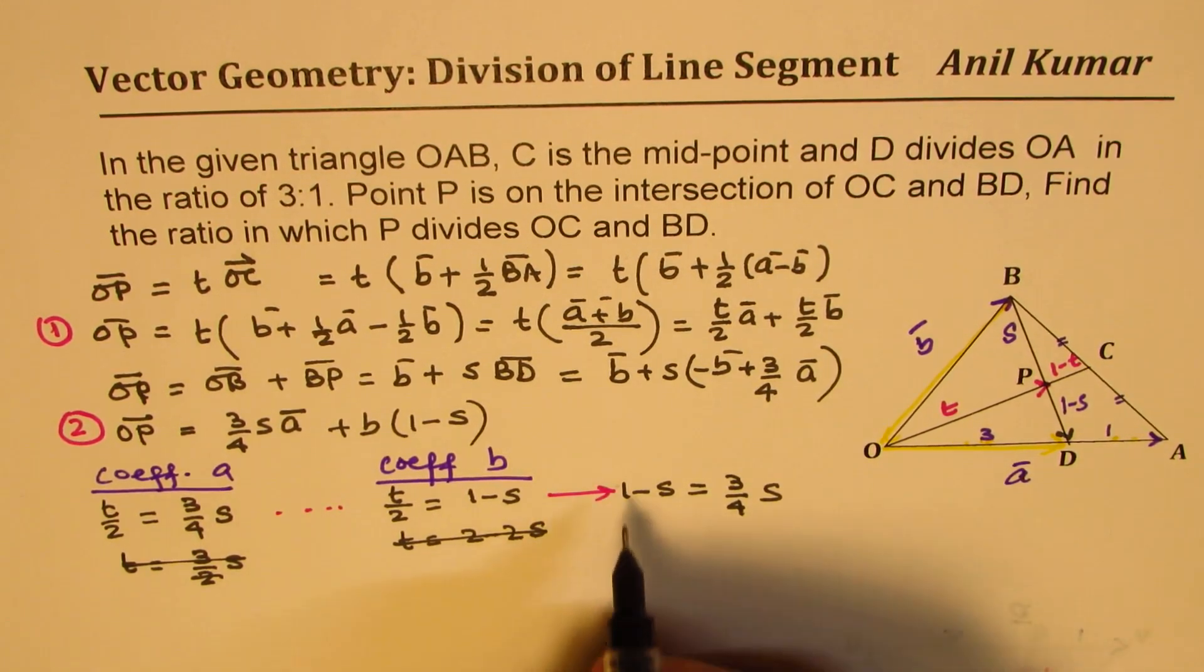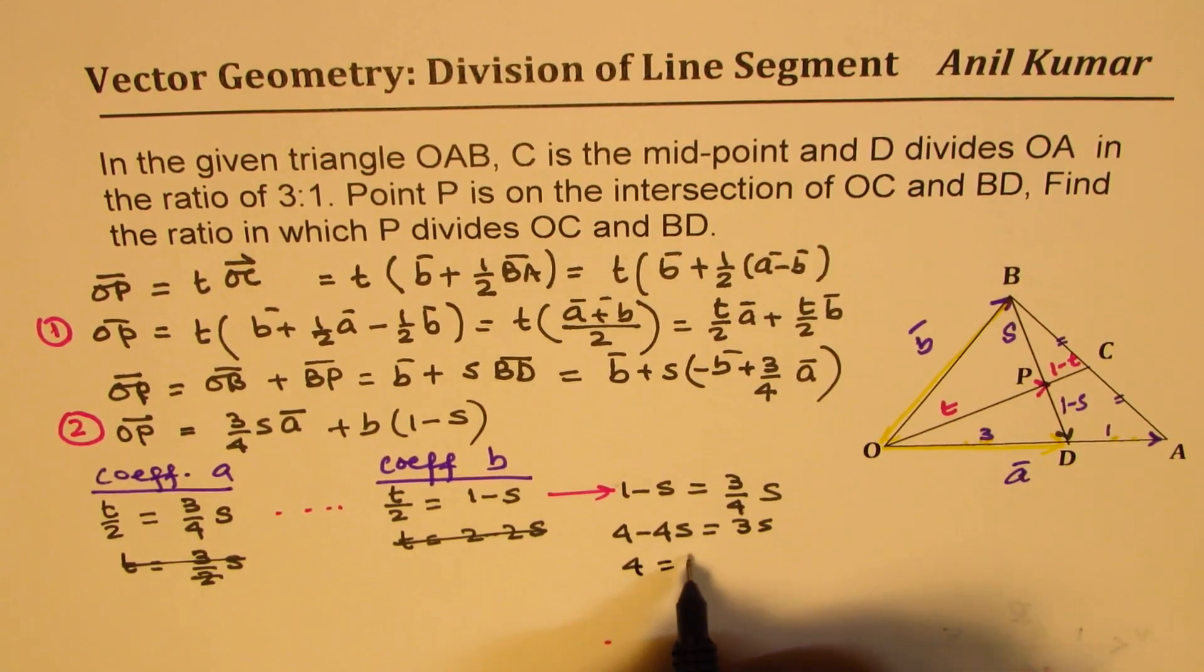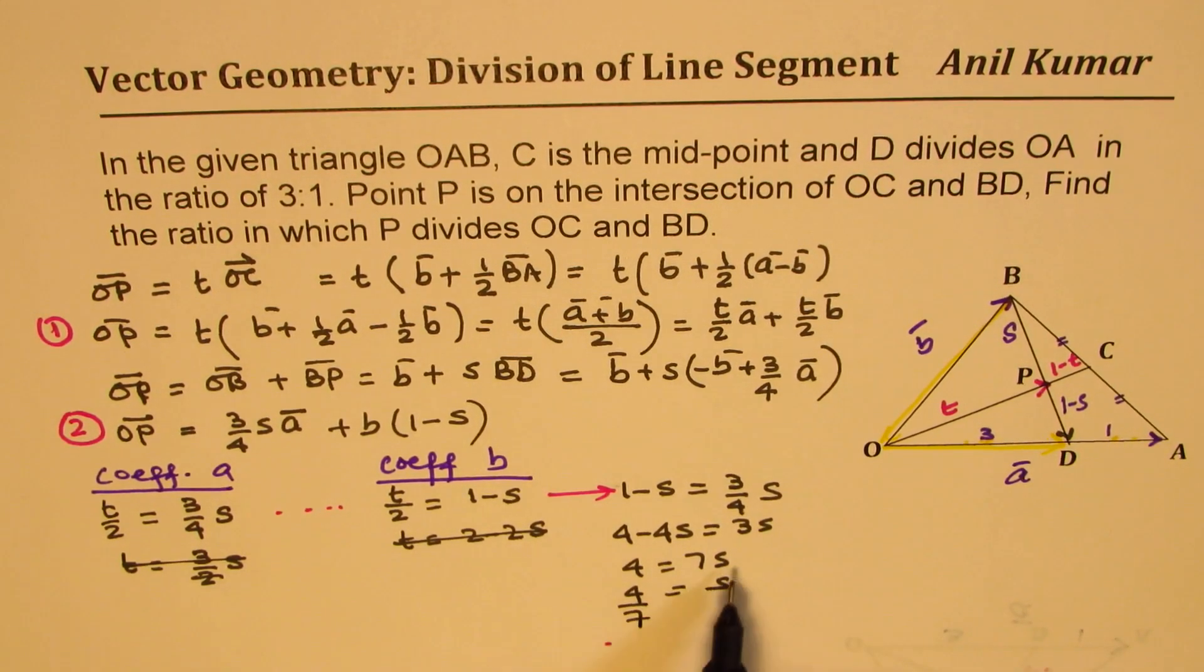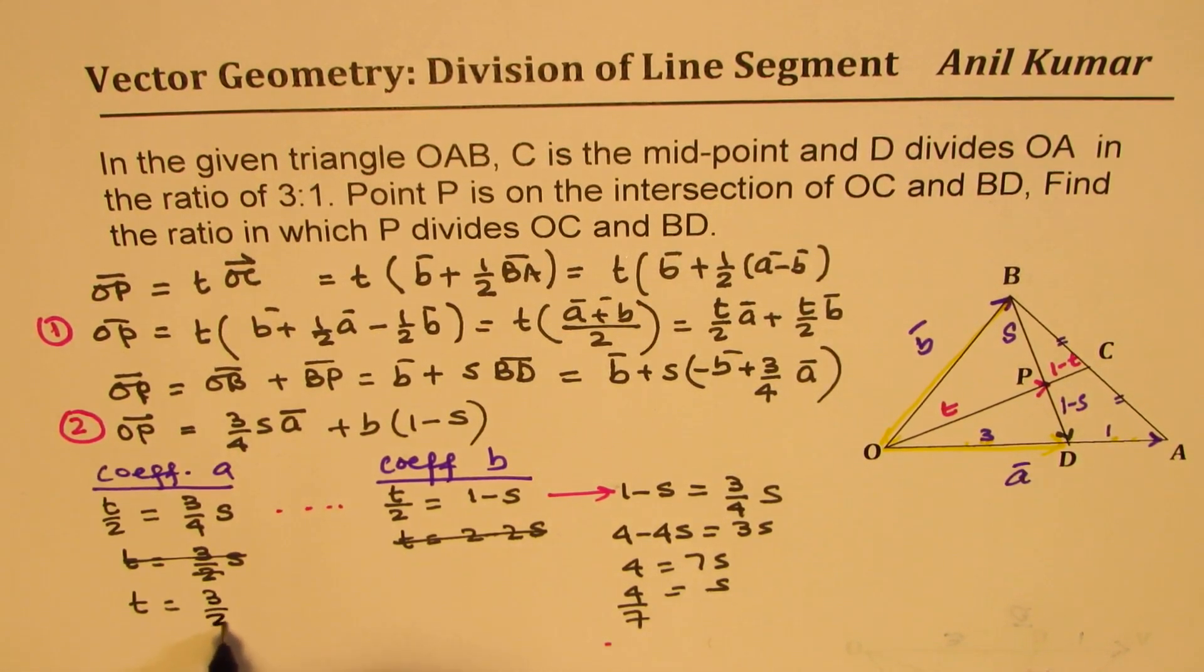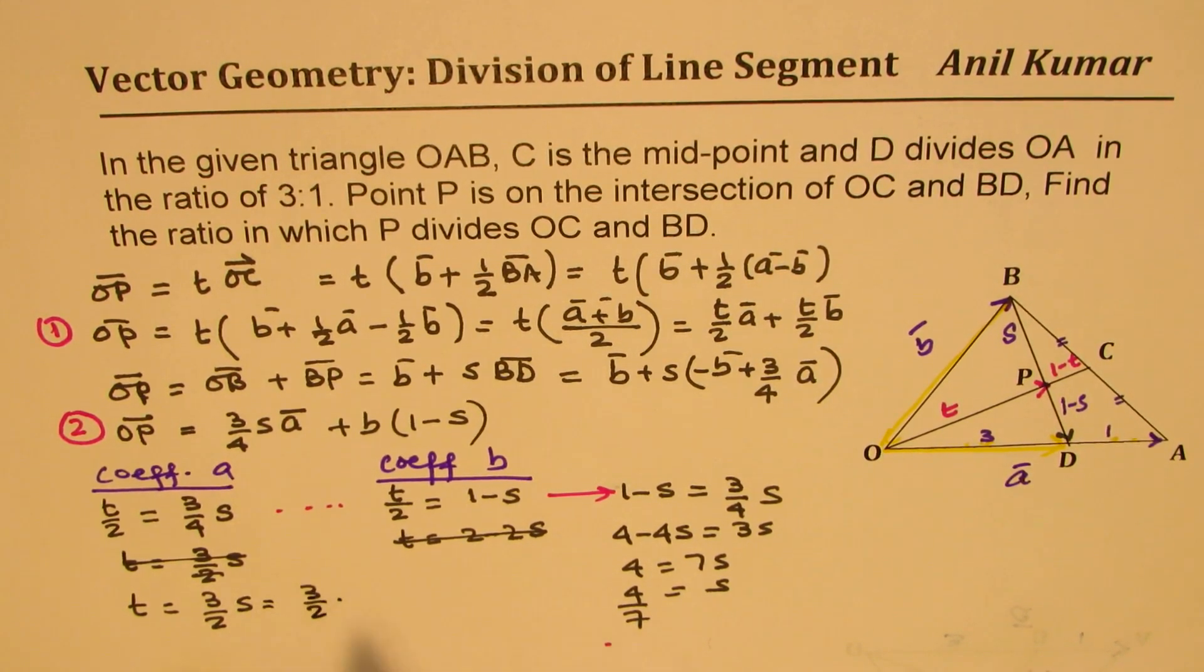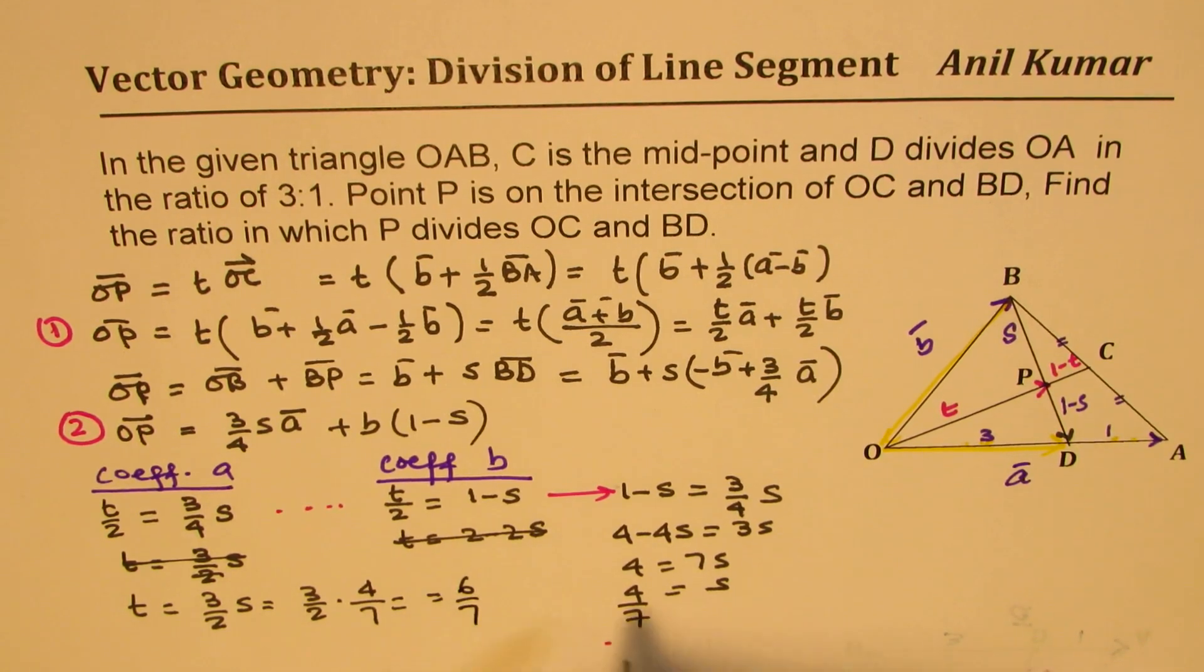So, now we will cross multiply. So, we get 4 minus 4S equals to 3S. Taking it on this side, we get 4 equals to 7S or S is equals to 4 over 7. So, we get the value of S. Now, from here, we can get the value of T. So, T is 3 over 2S, which is 3 over 2 of 4 over 7. So, S is 4 over 7. So, we get here that goes 2 times. 6 over 7 is the value of T.